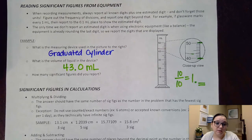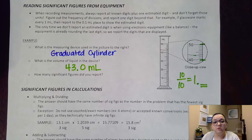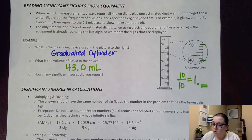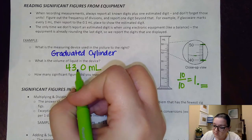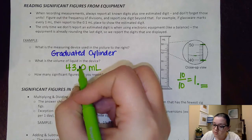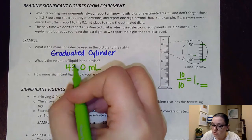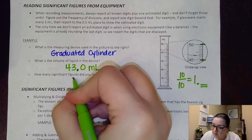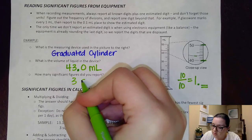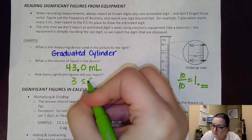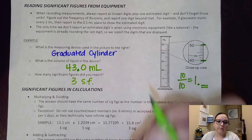I asked how many significant figures did we report? We had a decimal that's present, so I count from the Pacific side — one, two, three — and so we had three significant figures there.